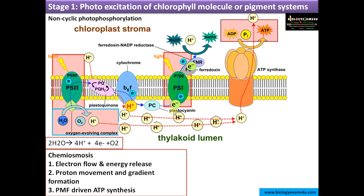Once the proton gradient is created, H⁺ ions have a tendency to move back to maintain equilibrium and balance the number of protons on either side of the thylakoid membrane. The only way out for these protons is through ATP synthase, as the lipid bilayer is impermeable to proton movement. As the protons move through ATP synthase, this movement drives the catalysis of ADP and inorganic phosphate (Pi) to form ATP — this proton-driven ATP synthesis is chemiosmosis, coupled with electron flow and proton gradient formation.